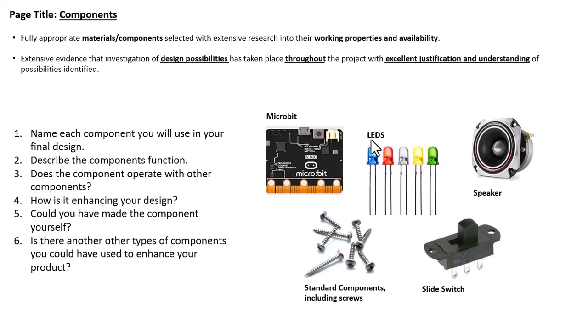Talk about how components are enhancing your product — for example, using a micro:bit and programming to make it more interactive and desirable. Consider whether you could have made the component yourself; a lot of people talk about buying hinges, but making the hinge shows a greater level of skill, allows you to customise it, and it can match your materials — for example, a plywood or MDF hinge. There is a reason to buy components if you can't make them small enough, but making them yourself can enhance your project and get you a better grade. Also consider any additional components you'd like to include that aren't available through school.